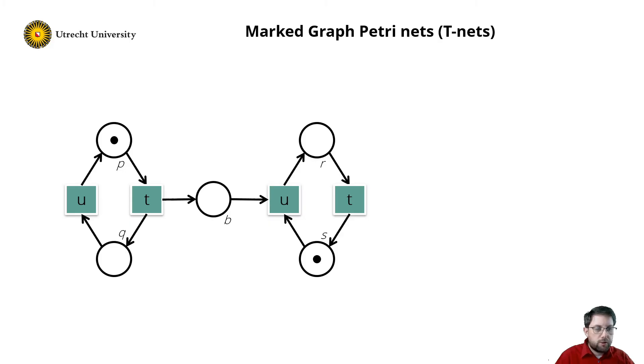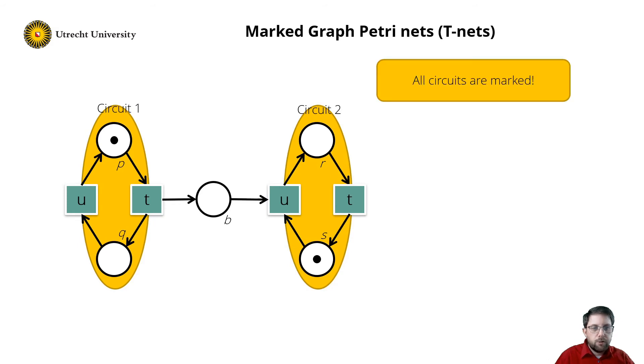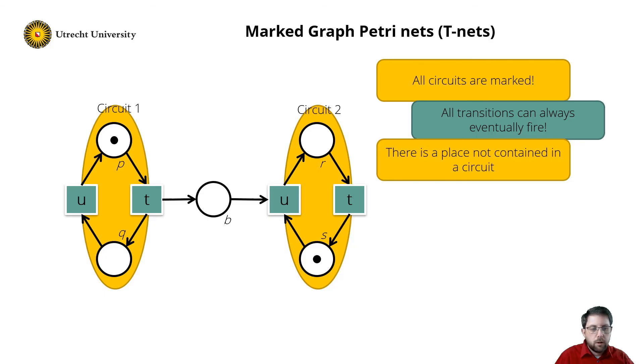There are two circuits, one with places P and Q, and one with places R and S. As both circuits are marked, all transitions can always eventually fire. However, place B cannot be contained in a circuit, and hence the reachability graph of this net is infinite. And we call the first circuit with transitions U and T a generator, as it produces an infinite number of tokens in place B.